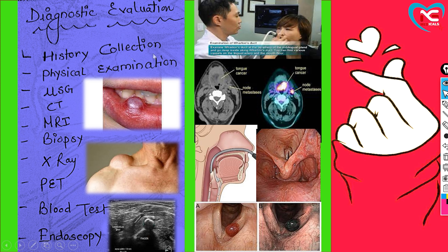Next is physical examination. As always, first we check vital signs — temperature will be elevated due to internal infection, pulse will be increased. Respiratory problems occur when cancer metastasizes to the lungs. Blood pressure problems arise if cancer spreads to the kidneys, as the kidneys cannot excrete sodium properly, causing BP to rise.